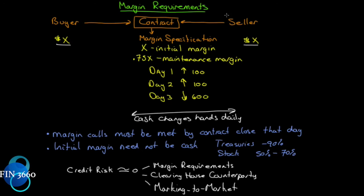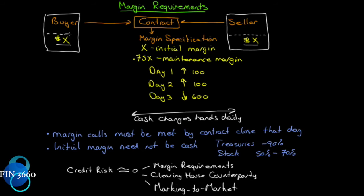Here's the buyer's account — the margin is simply just segregated. It doesn't change hands. Here's the seller's account — the margin again is just segregated in the account. In other words, it's restricted funds; they can't touch it. It's the margin they have to post in their own accounts. So when they enter a futures contract, no money changes hands. It's just that the margin specification has to be met in each of these accounts.